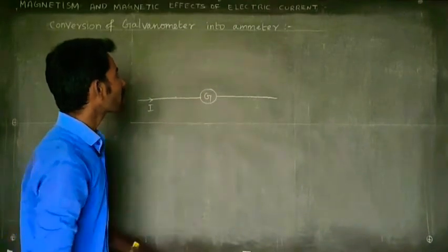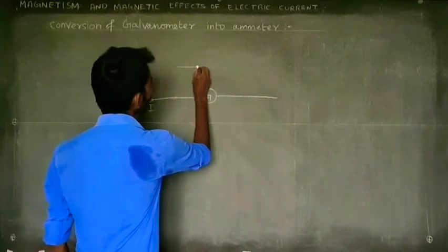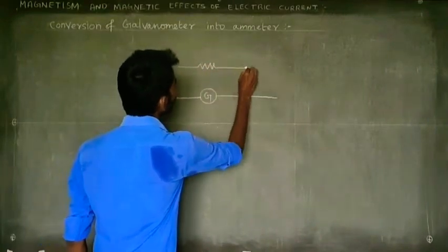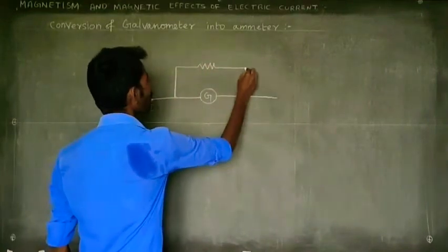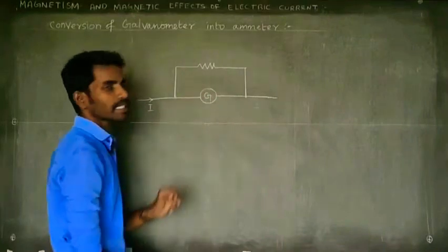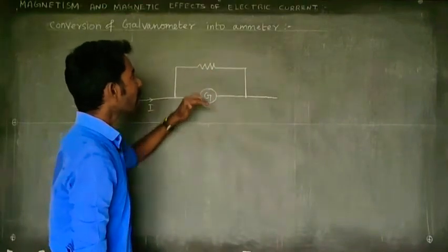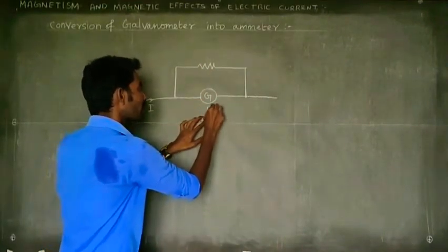This galvanometer is connected in parallel. We can connect a resistance to the galvanometer in parallel. If we take the galvanometer resistance, what should we do with the galvanometer resistance?